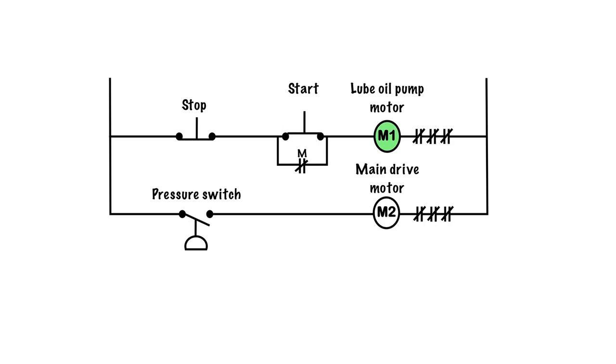Let's take a look at this circuit. We'll press start, which will energize M1 coil, starting the lube oil pump motor. These will close because they're associated with this coil. When I lift up on the start or let go of the start push button, the lube oil pump motor will continue to run. The M contacts seal-in circuit is working, holding in and M1 is running and building up pressure.